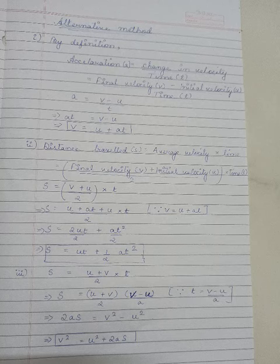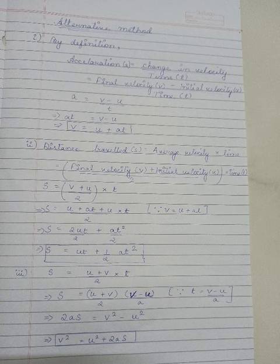We will start with the alternative method — that is, without using any graphs. By definition, acceleration a is change in velocity divided by time t. Change in velocity means final velocity minus initial velocity; final velocity is denoted by v and initial velocity by u. So a = (v - u) / t, and by cross multiplying, v = u + at. This was an easy proof for the first equation.